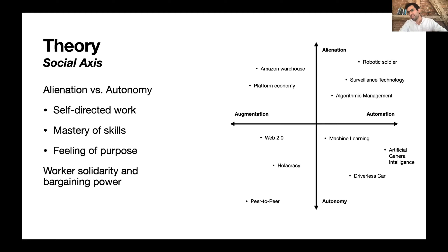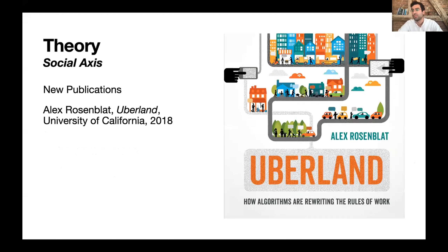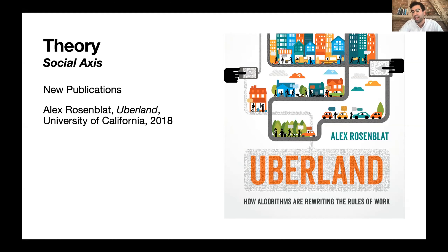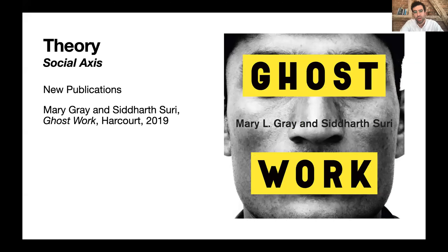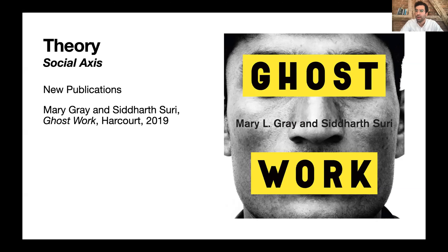Opposing autonomy, of course, to alienation. Alongside the growth of the automation discourse, we've had a range of social science investigations of the actual digital economy. Alex Rosenblatt's Uberland looks at what's actually happening in rideshare services — are workers becoming more autonomous with algorithmic management, or is algorithmic management furthering their precarity? Ghost Work by Mary Gray and Siddharth Suri looks at hidden forms of labor behind apparently automated processes,